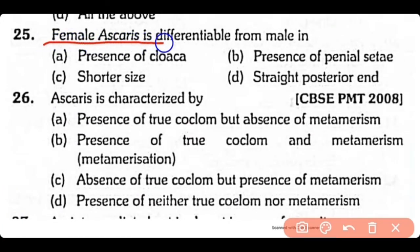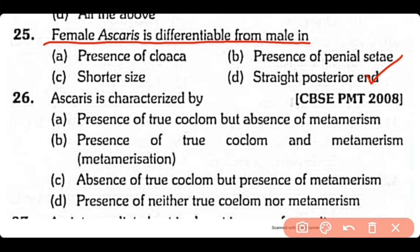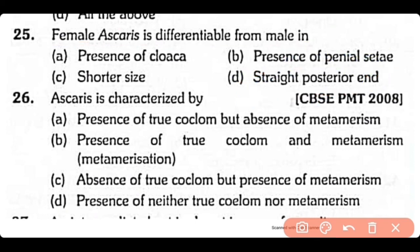Question 25: Female Ascaris is differentiable from the male by — presence of cloaca, presence of pre-anal spicules, or shorter size with straight posterior end? The correct answer is Option D. Female Ascaris differs from the male because the body of the female is straight at the posterior end.